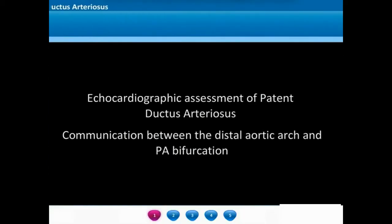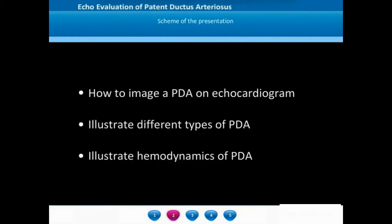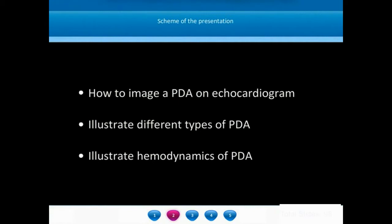In this module, we are going to discuss the echocardiographic assessment of patent ductus arteriosus. PDA is a communication between the distal aortic arch and the pulmonary artery bifurcation. This module will discuss how to image a PDA on echocardiogram and illustrate different types of PDA: a restrictive PDA, a moderate sized PDA, a very large PDA, and the different hemodynamics of PDA.